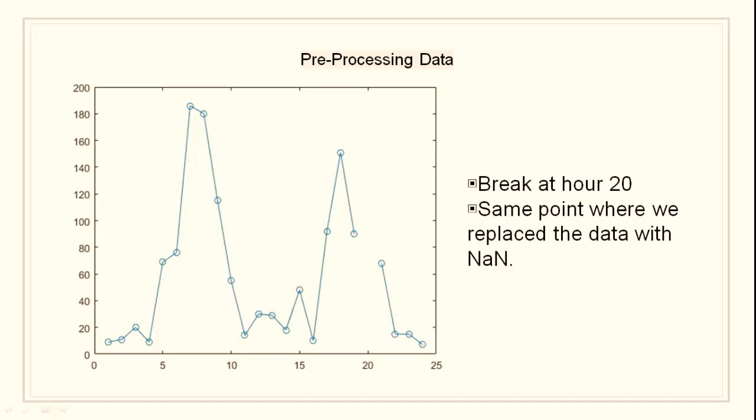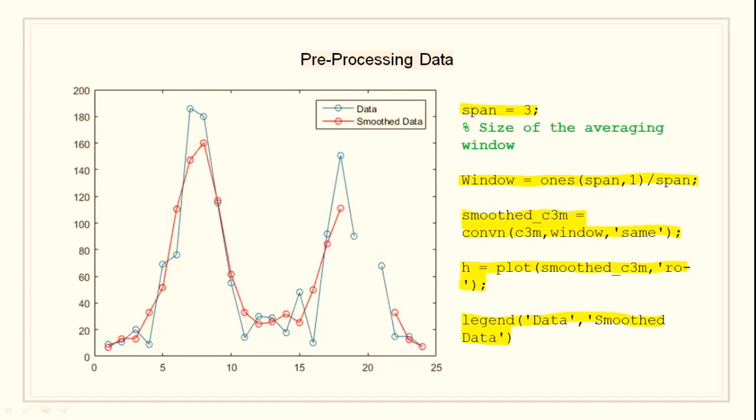Now moving to smoothing. I am going to apply a simple moving average smoother using the function convolution with n dimensions. First I am going to specify size as 3. I am going to create a window of size 3 with ones. Then to smooth out the data I will pass C3M that is our data, the window that I created, and parameter same that will allow me to return the data to be of same size as C3M. Now I am going to plot this smooth data. The graph you see is the comparison of normal and the smooth data. The smooth data is represented as red.